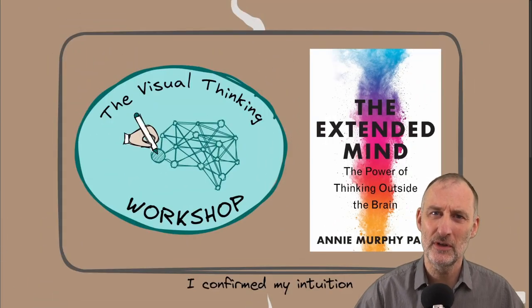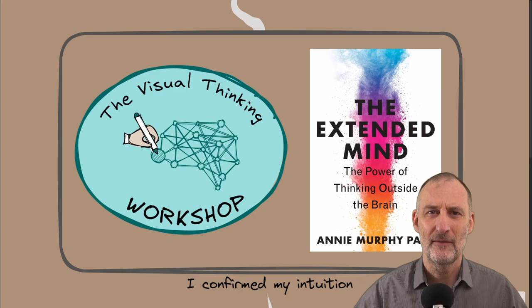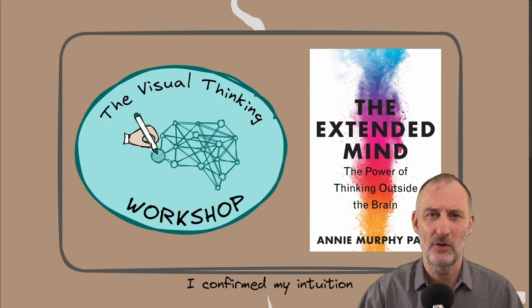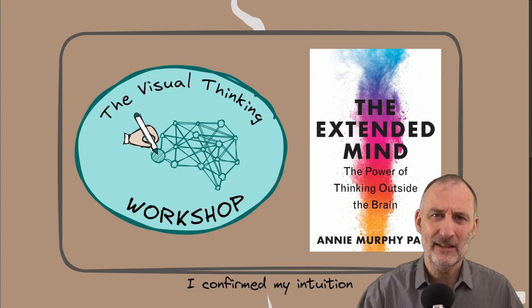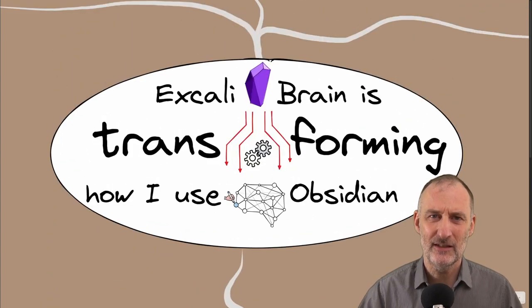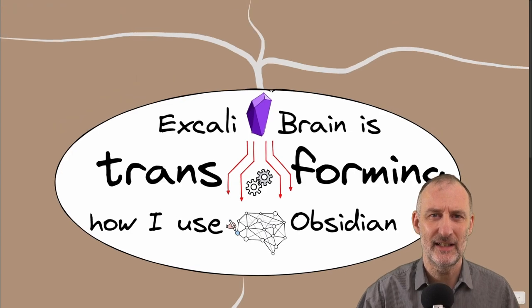So in cohort two of the visual thinking workshop, we are creating a book on a page for The Extended Mind by Annie Murphy-Paul. And as I was reading the book, I finally understood why Excalibrain is transforming the way I use Obsidian.